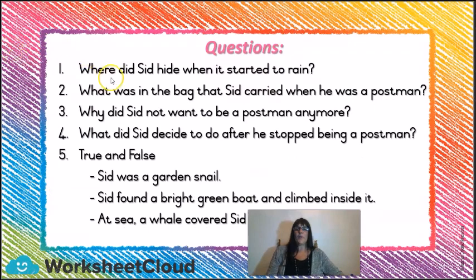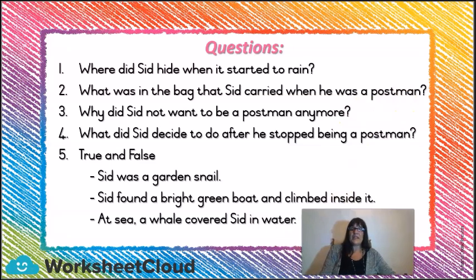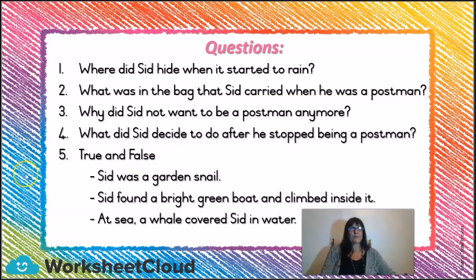Number one: where did Sid hide when it started to rain? Now, perhaps you can picture it in your mind already. Number two: what was in the bag that Sid carried when he was a postman? Number three: why did Sid not want to be a postman anymore? Number four: what did Sid decide to do after he stopped being a postman? And then true or false — true means yes, false means no. Sid was a garden snail — true or false? Sid found a bright green boat and climbed inside it — true or false? At sea, a whale covered Sid in water — true or false?